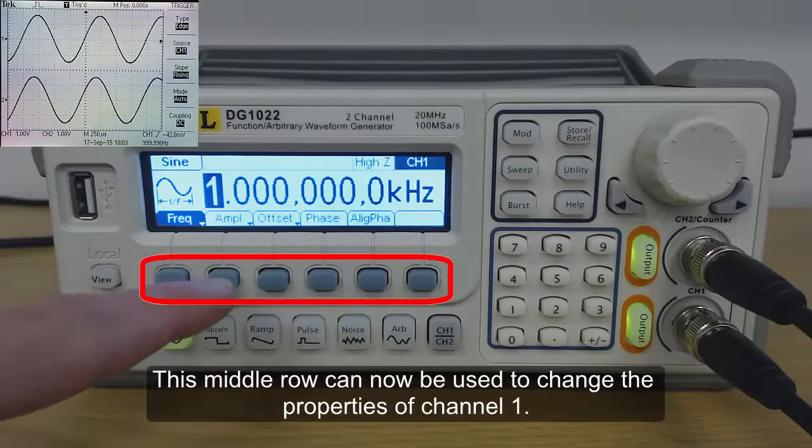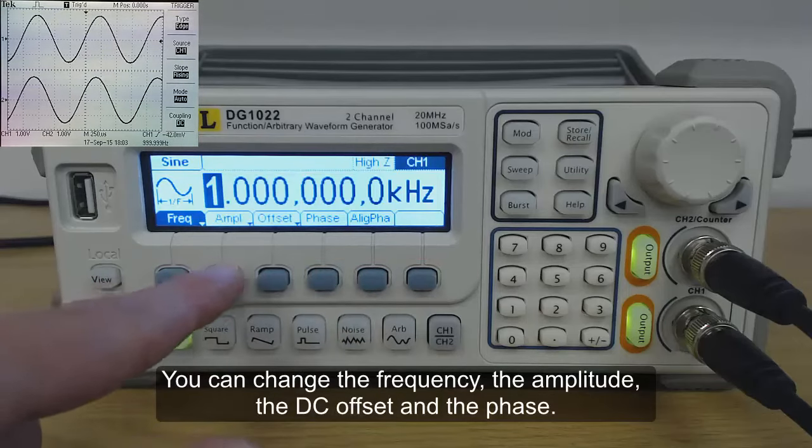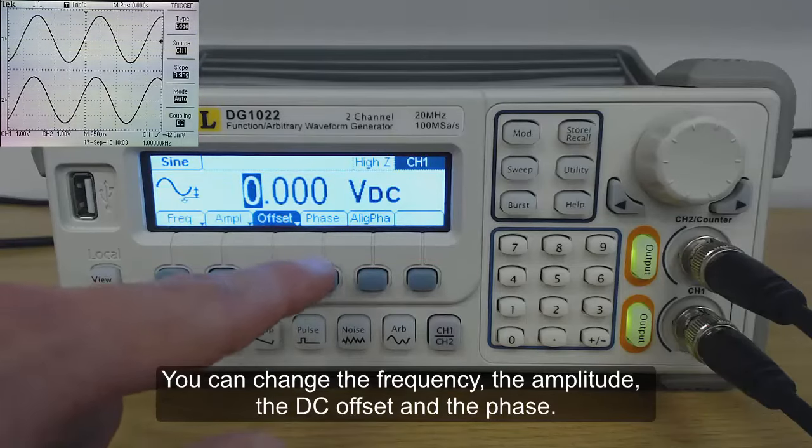This middle row can now be used to change the properties of channel 1. You can change the frequency, the amplitude, the DC offset, and the phase.